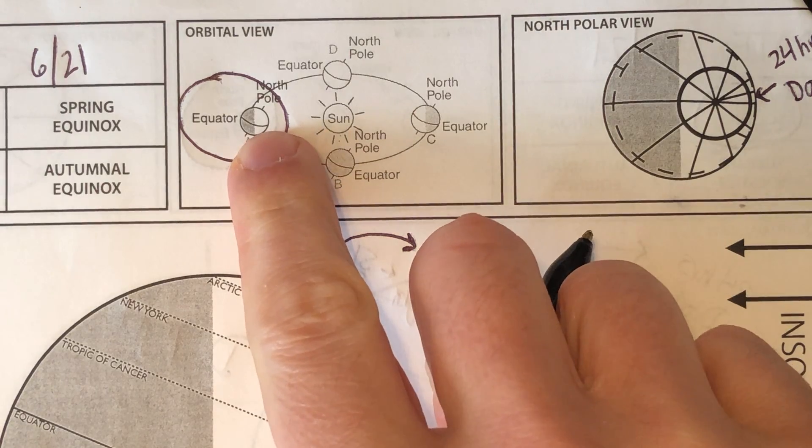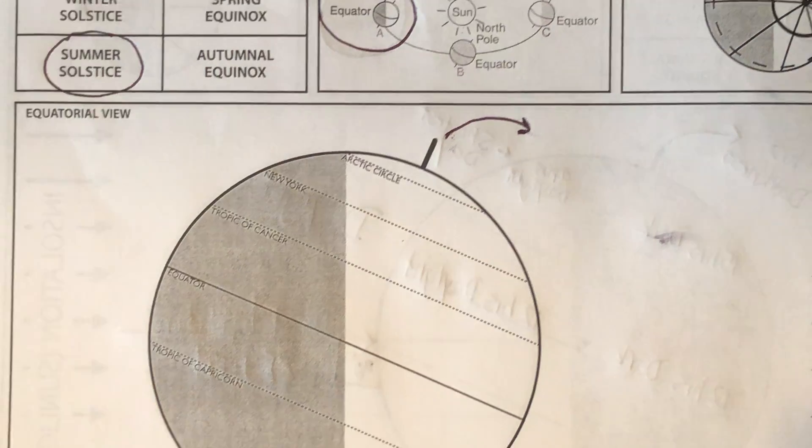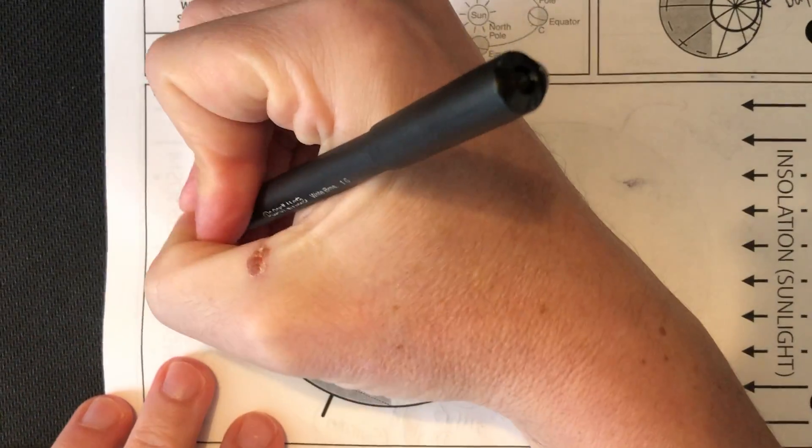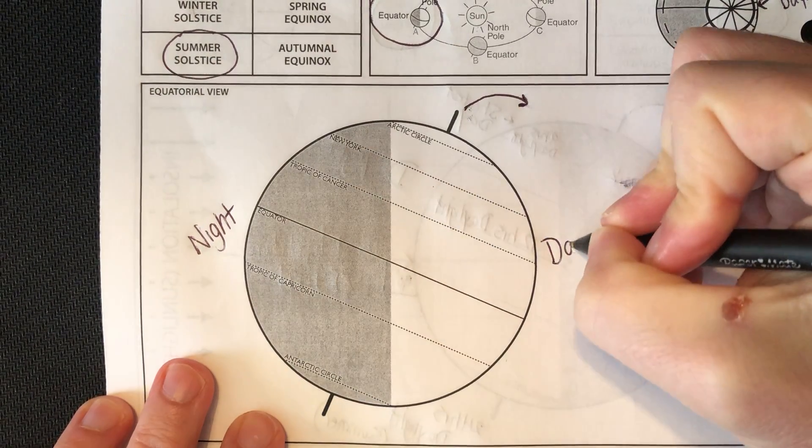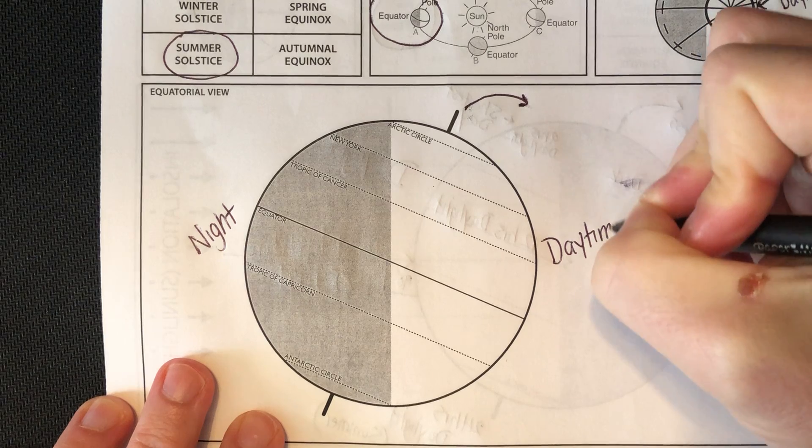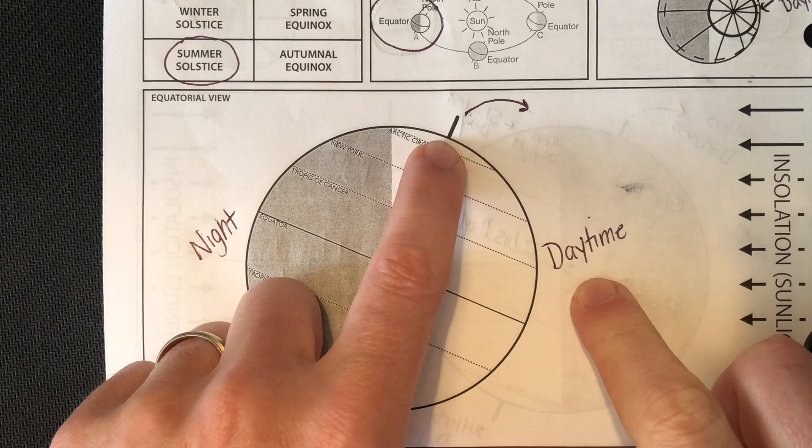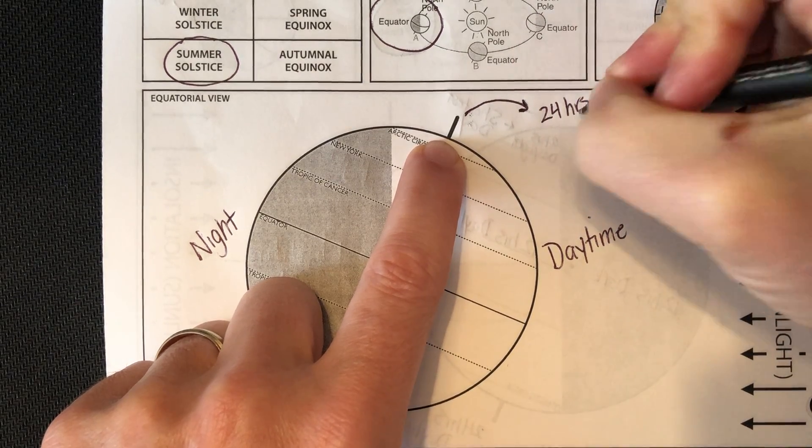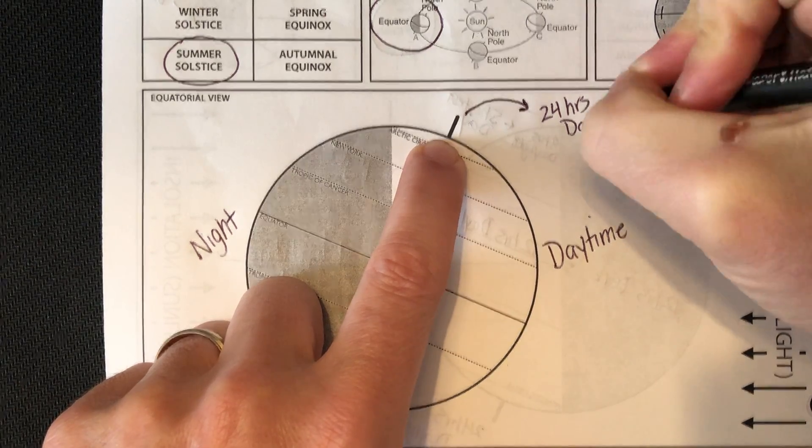Let me show you the equatorial perspective. This is my terminator. That's going to separate my nighttime from daytime. I've got my nighttime and daytime. If you look at my north pole, my north pole is in 24 hours of daylight. So that's our summertime.